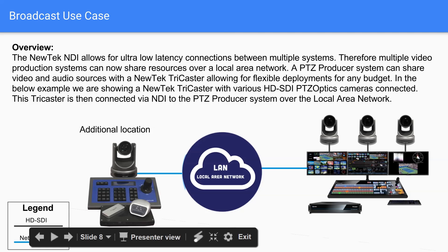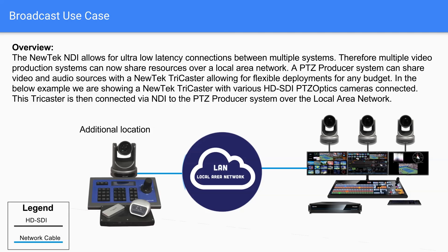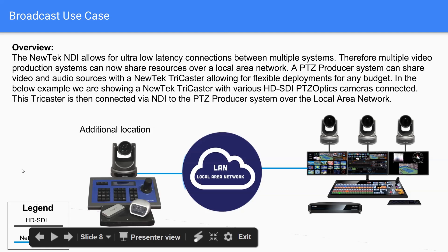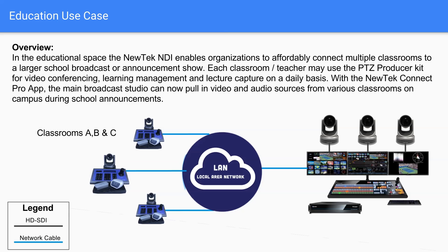In a broadcast use scenario, say you've got a nice broadcast studio with the brand new TriCaster TC1 and you want to add an additional location on your network. You can connect the two systems over a local area network with a standard gigabit connection, and the new TriCaster can pull in something like over 40 NDI sources — giving you an almost limitless number of video sources over your network.